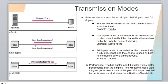In half duplex mode, communication happens in two directions, but the channel is used alternately by both connected devices. That means system A and system B can both communicate with each other — A can act as source while B acts as destination, and after a while B can act as source while A acts as destination — but this cannot happen simultaneously.